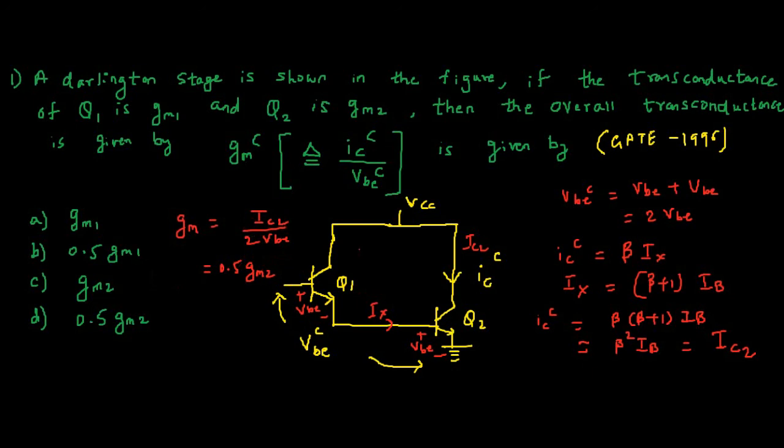This is 1 by 2, 0.5 IC upon VBE. IC2 upon VBE is nothing but GM2. In this case IC2 is equal to IC collective.